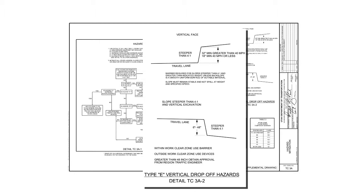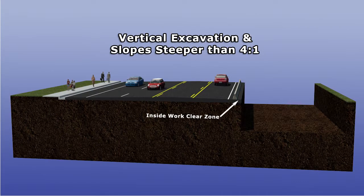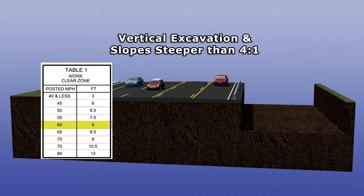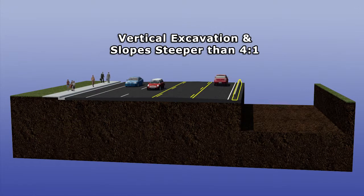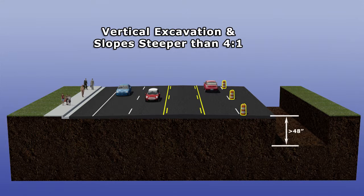Let's explore Detail TC3A-2 for vertical face or slopes steeper than 4 to 1. Barrier is required unless the back slope is a smooth uniform surface of suitable material to remain stable at speeds and heights shown. If barrier was not placed, an errant vehicle could potentially climb the slope and roll. For vertical excavation or slopes steeper than 4 to 1, barrier is required within the work clear zone. For example, if you have a posted speed limit of 60 miles per hour with a work clear zone requirement of 8 feet, the 8-foot measurement is taken from the edge of travel lane towards the hazard. Since the remaining shoulder has a width of 4 feet, barrier is required. Here you have a shoulder width of 10 feet, effectively placing the travel lane outside the work clear zone, which requires the use of traffic control devices. If the vertical drop-off is greater than 48 inches, you must obtain approval from the region traffic engineer regarding the traffic control device and barrier requirements.